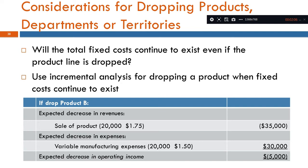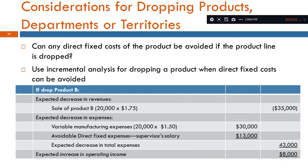In product drop decisions, fixed cost is of the average type. The total fixed cost in a product drop — if fixed costs continue, the contribution margin position remains. Therefore, fixed cost becomes irrelevant in this case. The next step is to use the incremental analysis for dropping when fixed costs continue to exist. If fixed costs can be avoided, we proceed with incremental analysis. Can any direct fixed cost of the product be avoided if the product line is dropped?